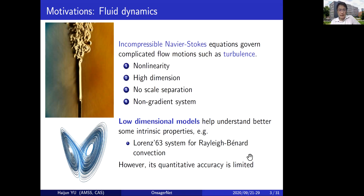One typical example is the Lorentz system for the Rayleigh-Bénard convection problem. Lorentz obtained a three-mode ODE system for the Rayleigh-Bénard problem by using only three mostly linearly unstable Fourier modes and a Galerkin approximation. Using this model, he predicted the chaotic solution. That's why the Lorentz model is very famous — it showed to have a chaotic solution. However, the Lorentz system is a highly truncated system, so its quantitative accuracy is actually very limited.